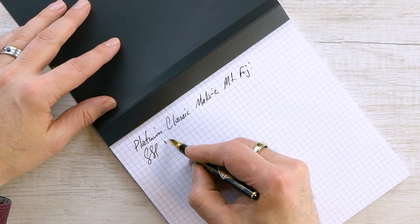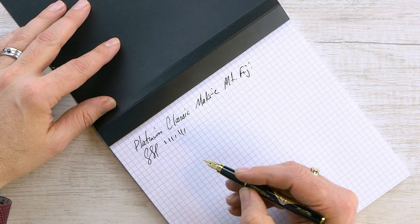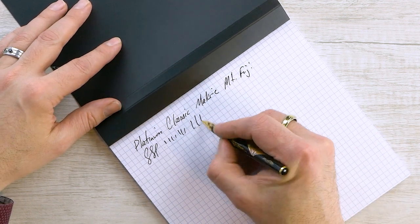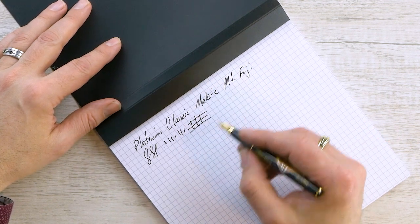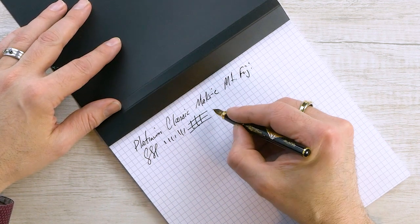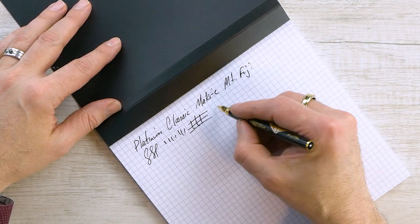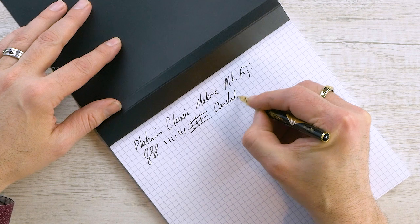They're firm. There's no, there's no softness to them whatsoever. I know some people think an 18 karat nib should be more flexible, but these are firm, solid pens. You can, you can write with them very fast, but there is no flexibility on these. You should not try to flex them.